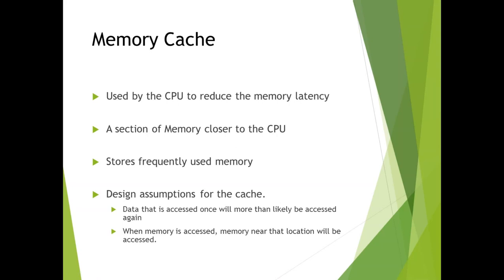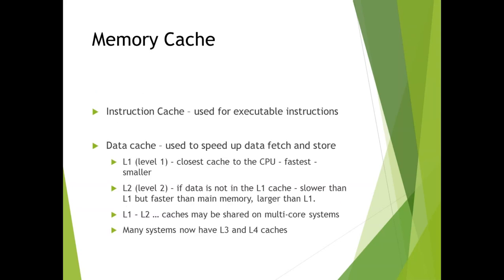A memory cache is a section of memory that is closer to the CPU and is supposed to store frequently used data. The two main design assumptions for the cache are: first, data that is accessed once will more than likely be accessed again; and second, memory that is accessed once will typically be accessed in sequential order — and sequential access gives you better performance. Memory caches happen on all machines, from PCs through distributed systems to Windows machines.